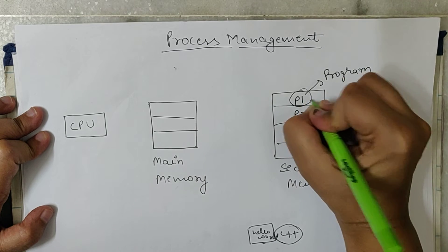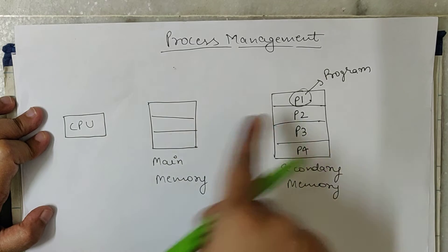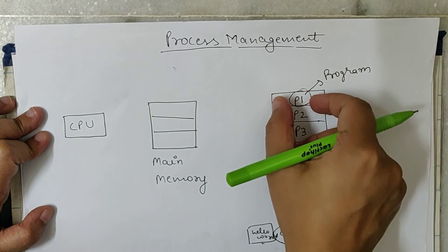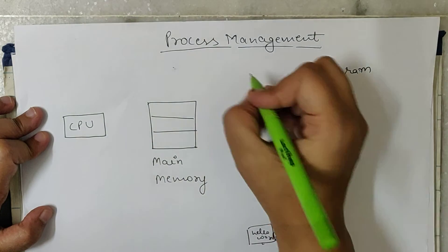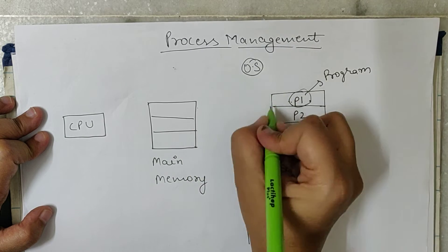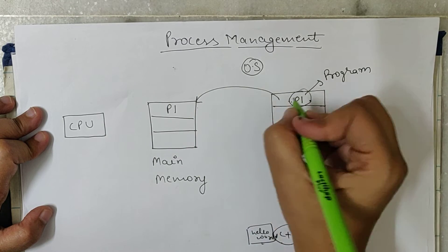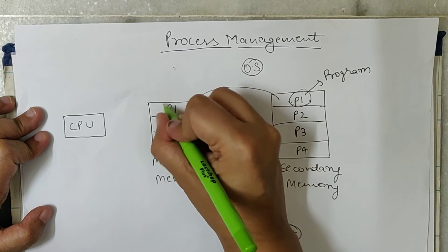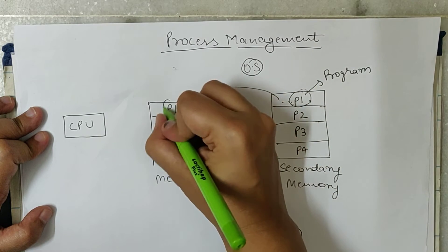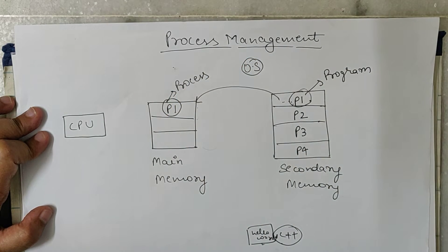If I want to execute a particular program, it has to reside in the main memory. The CPU will execute program P1, so for execution, program P1 must reside in the main memory. What the operating system does is move program P1 into the main memory. Once the program is moved inside the main memory, it is now known as a process — not a program, but a process.